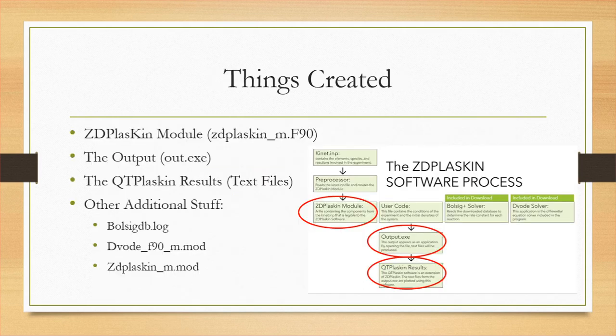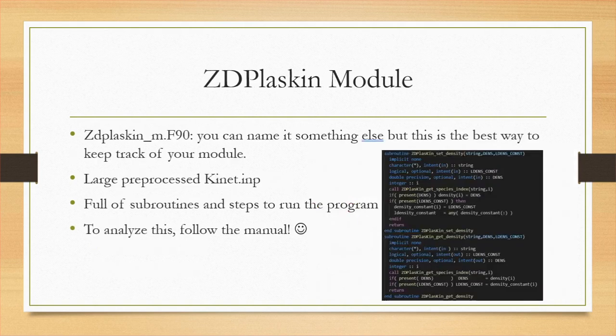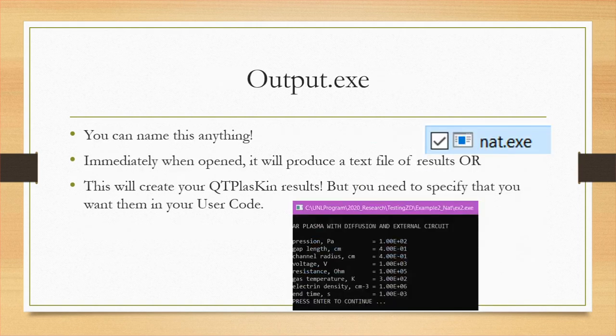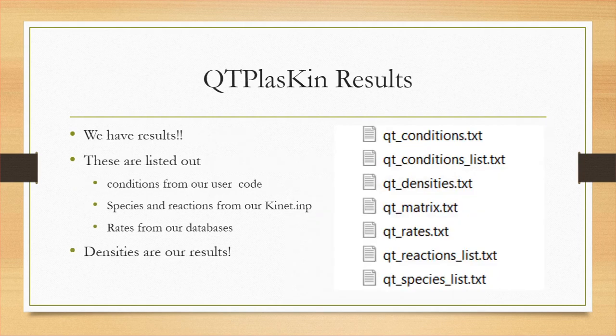Getting back to the roadmap — we already know what's been downloaded and what we need to write. Let's look at what needs to be created. First is the ZD Plaskin module, created by pre-processing the Connect.INP. It is a large file full of subroutines and code, and the ZD Plaskin manual will walk you through understanding specific lines. The output is our results in the form of an application — you can name this anything. When you open it, it'll show your results. If you want QT Plaskin output, you need to specify that in your user code. The QT Plaskin results list your conditions, reactions, and results.